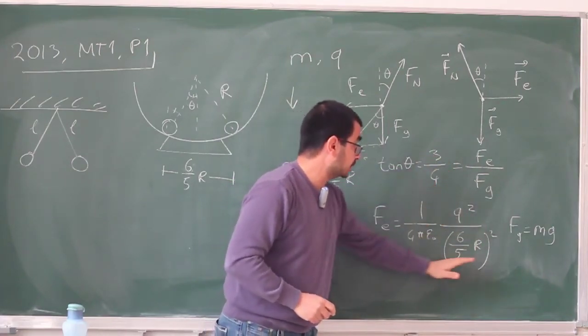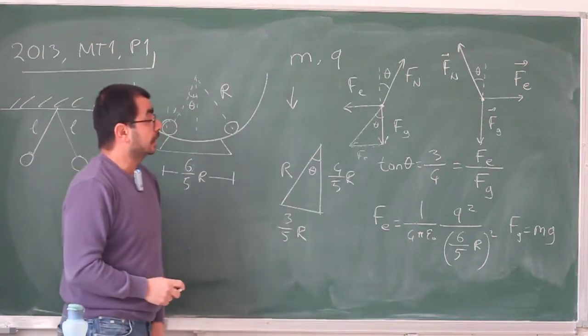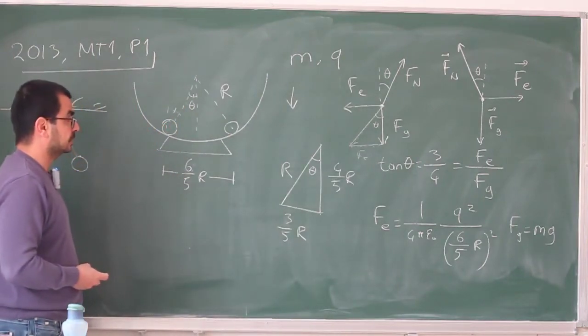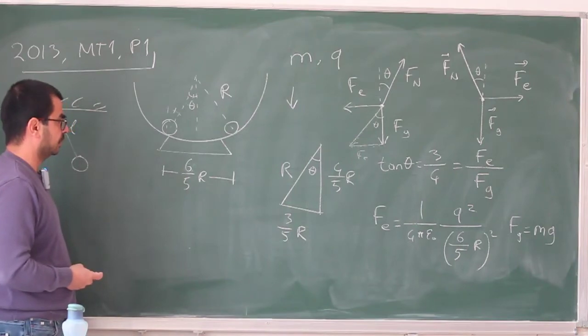So you need to take this ratio, and you can actually solve this equation for q. So 3 fourths is this divided by mg, and you'll just need to pull q out. I'm not going to do this, but I think it's done correctly in the solution provided.